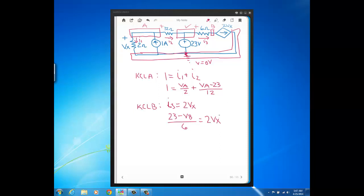And if you look at where Vx is in the circuit, over on the left side of the circuit, the voltage across the 2 ohm, well that's equal to VA. So we can write Vx as VA, since Vx is equal to VA.